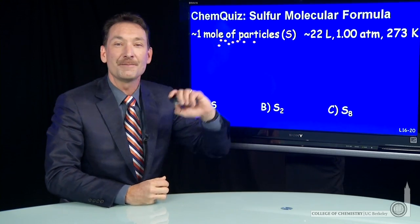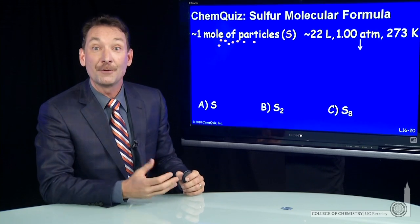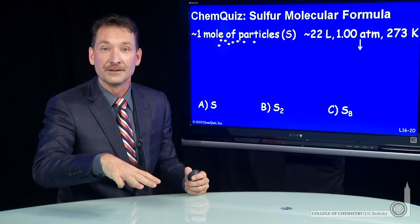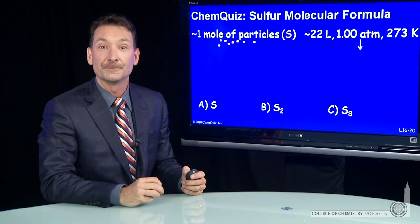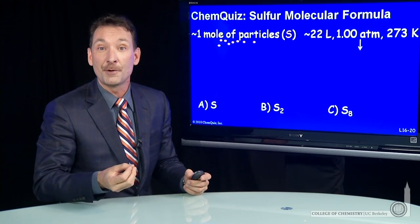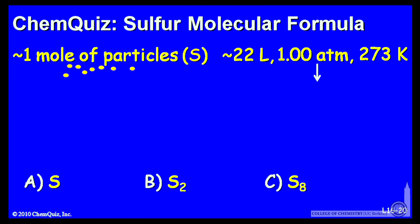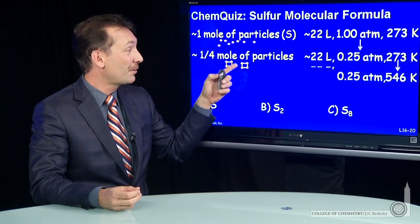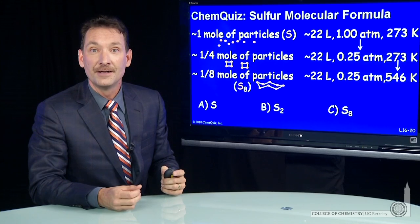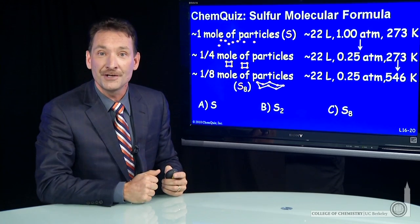But I didn't have 1 atmosphere of pressure in my sample. I only had a quarter atmosphere of pressure. How can you have that mole of particles give you a quarter atmosphere of pressure? You can't. You have to have fewer particles. So to get to a quarter atmosphere, I'd have to have the particles in groups of four. That would give me one fourth the particles and one fourth the pressure.